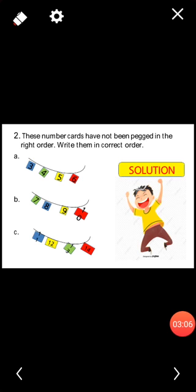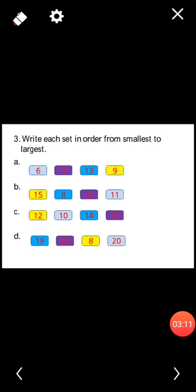This is the complete solution of the previous slide. Write each set in order from smallest to largest. Students, in row A you have to write down the first smallest number that is 1, after 1: 6, 9, and at the last that is the bigger one, 13.